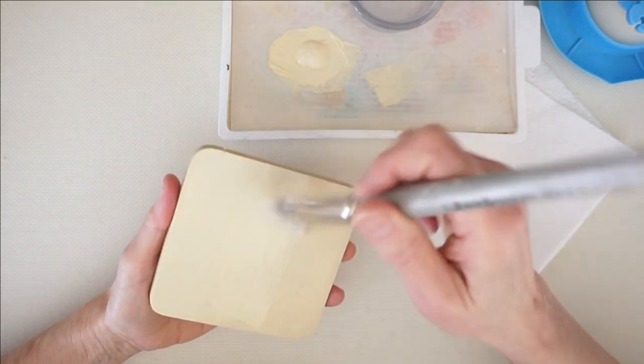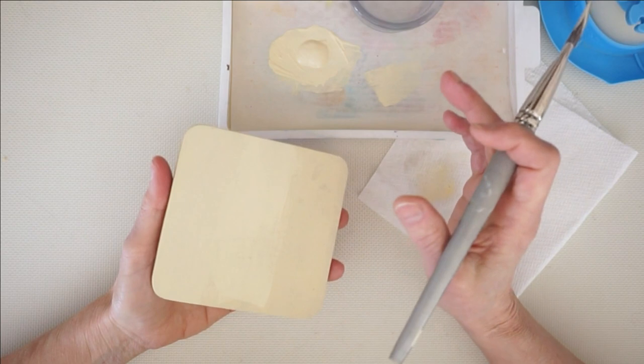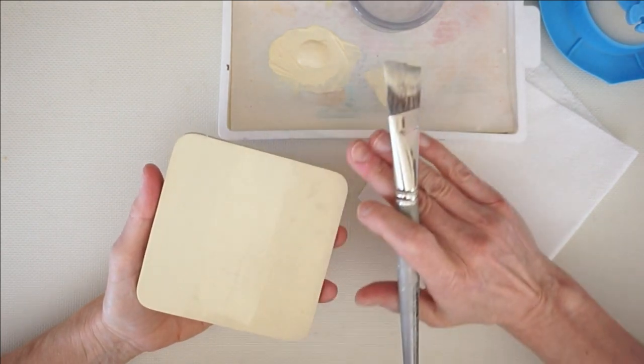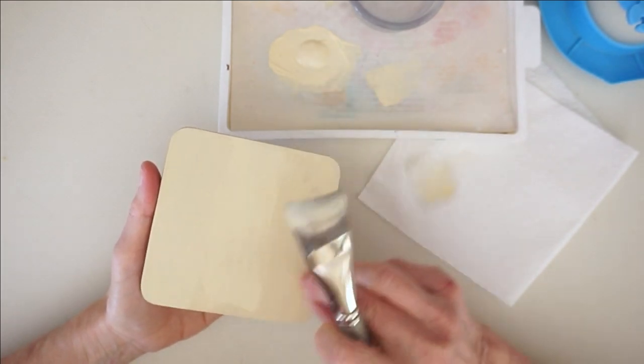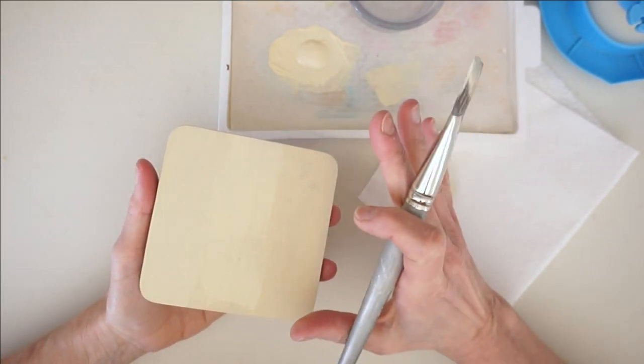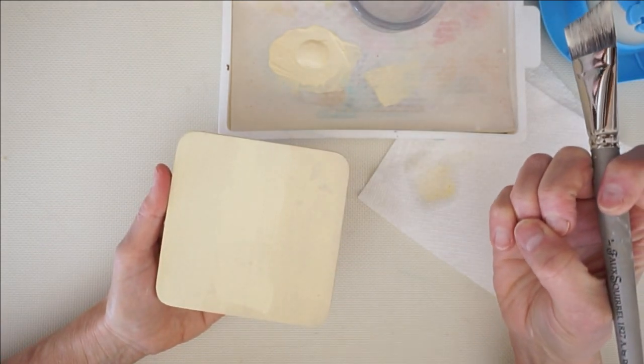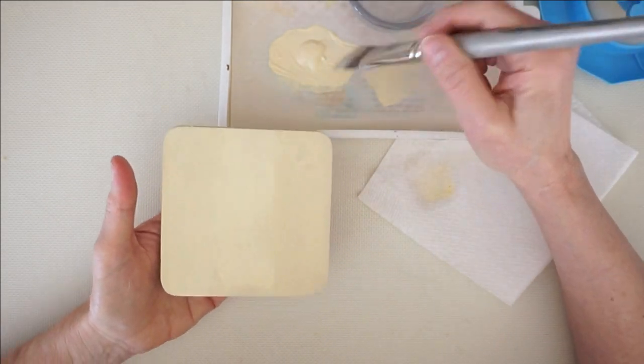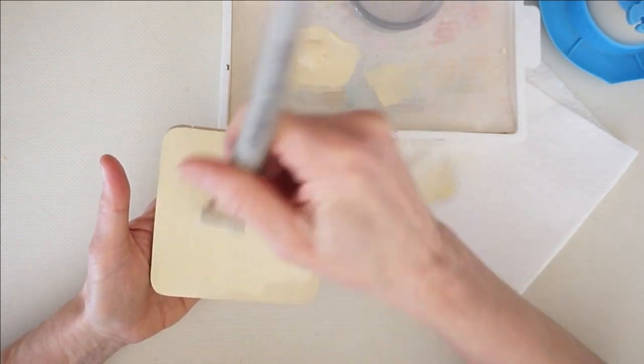And what happens if you sand that first coat is you're opening up those pores again. You're going to sand off the high parts, and it's going to leave raw MDF, so to speak, exposed. So it's going to be able to absorb again, and we really don't want to do that. So we want to put at least two coats on before we sand.